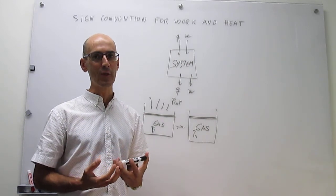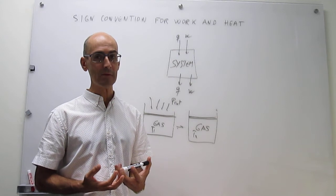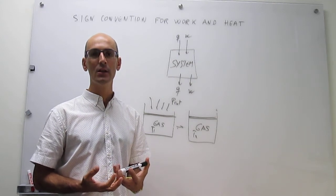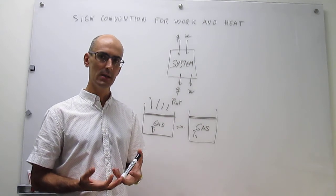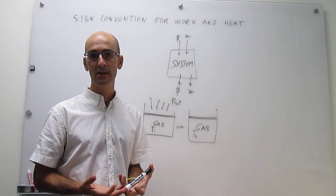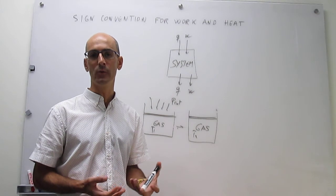is that this is really easy to determine in the case of chemistry and the life sciences, when you consider the perspective of the system. If the system is gaining energy, then those will be either positive work or heat. If the system is losing energy, then they will be negative, either work or heat.